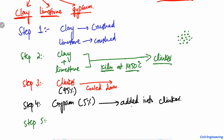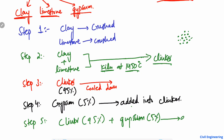In step number five, the clinker which is 95 percent and gypsum which is five percent are ground together by a machine into a powder. This powder is known as cement.